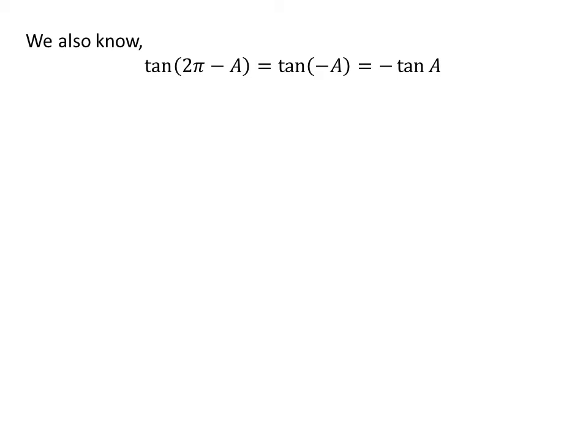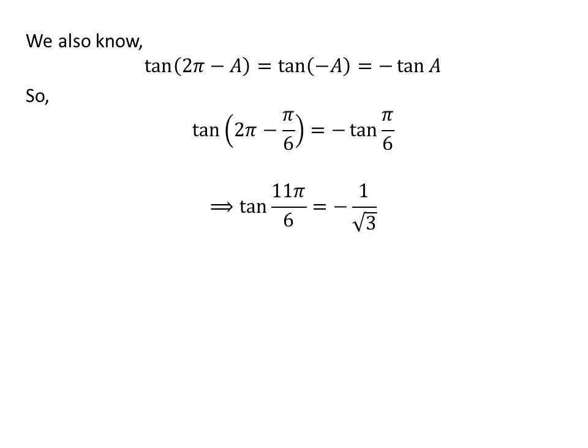We know the value of tangent of x repeats after an interval of 2π. So tangent of (2π minus a) is equal to tangent of minus a. We also know the identity tangent of minus a is equal to minus tangent of a. Applying these identities gives us tangent of 11π/6 is equal to minus 1 upon square root of 3.